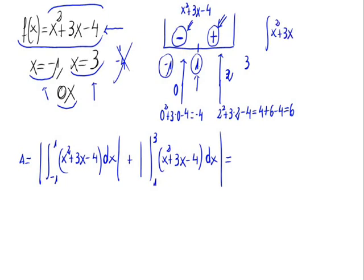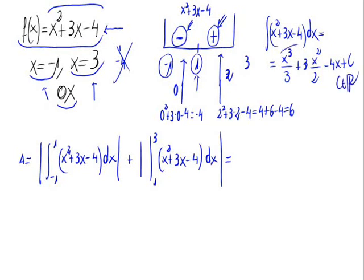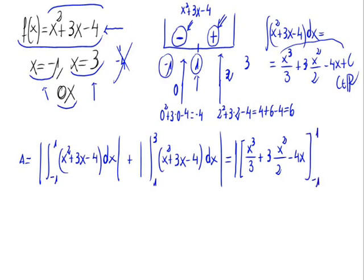Now let's calculate the antiderivative separately — integrating monomials: x² becomes x³/3, 3x becomes 3x²/2, and -4 becomes -4x. There's no need to include the constant since these are definite integrals. So the expression is |x³/3 + 3x²/2 - 4x| evaluated from -1 to 1, plus the same expression evaluated from 1 to 3.